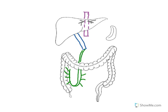The inferior mesenteric vein will come down behind the colon. I'll give it a loop down this way and give it a little bit of thickness. It will give off branches to the colon.